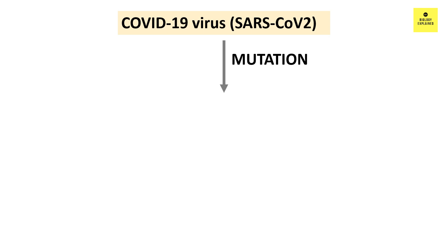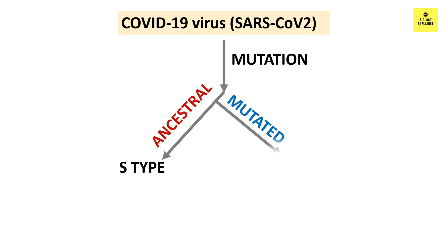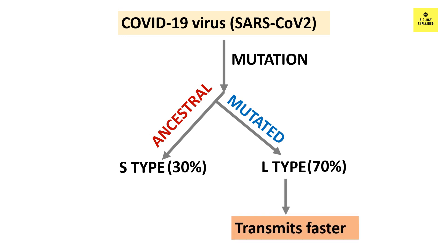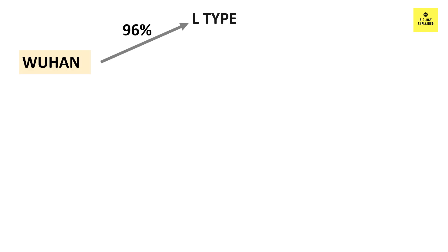The researchers designated the ancestral type as the S-type SARS-CoV-2 and the evolved one as the L-type SARS-CoV-2. It was found that although the S-type was the older one, the L-type was the major type among the 103 sequenced genomes. The L-type transmits much faster and replicates faster in human populations. Notably, 96% of viruses isolated from Wuhan were L-type and only 4% were S-type.